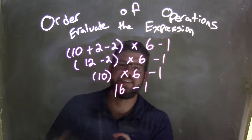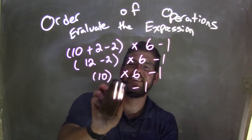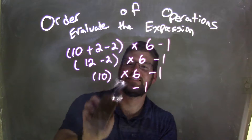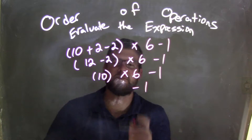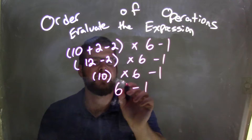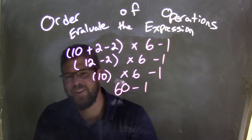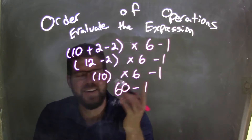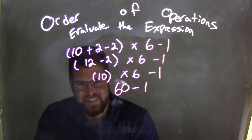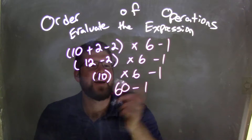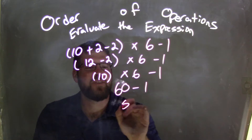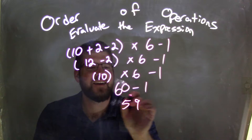Oh, not 16 — 60. I always do that. Sorry about that, I was adding it. 10 times 6 is 60, minus 1 is 59.